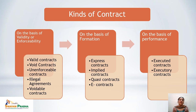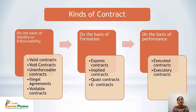Implied contracts are always clear from the conduct or behavior of the parties. They are inferred from surrounding circumstances. For example, when a person enters a restaurant and orders food, there is an implied contract between the restaurant owner and the customer. This type of contract is shown by the conduct of one or both parties.